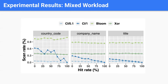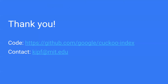In this experiment, we vary the hit rate of lookups and show the false positive rate on the y-axis. While bloom filters and XOR, a bloom filter alternative, are largely unaffected by the hit rate, KUKU Index strongly benefits from an increasing hit rate since it guarantees exact results for positive lookups. With that, I conclude my talk.